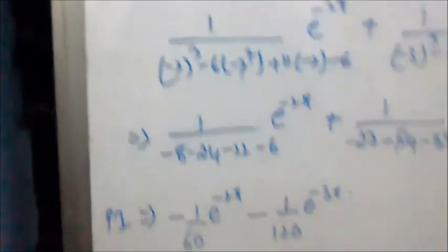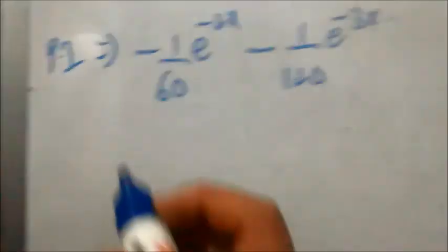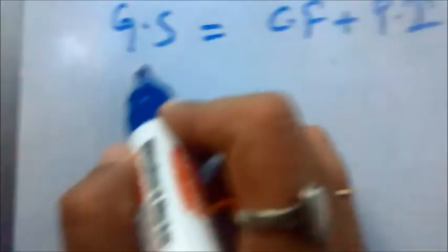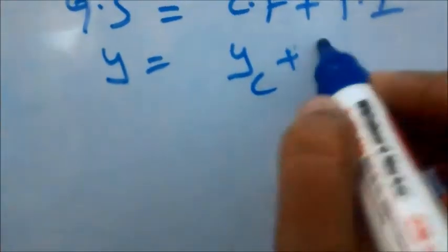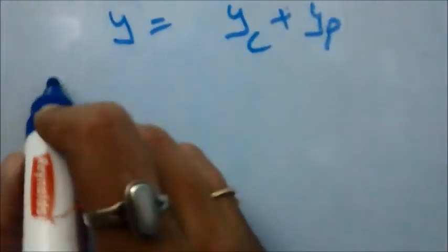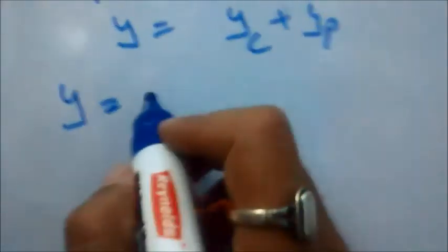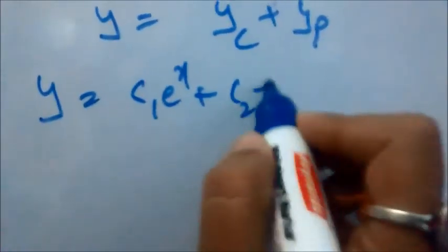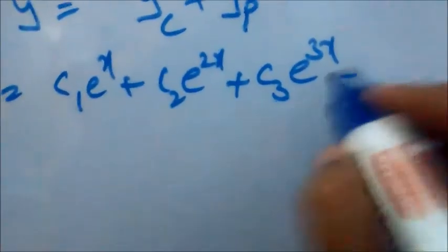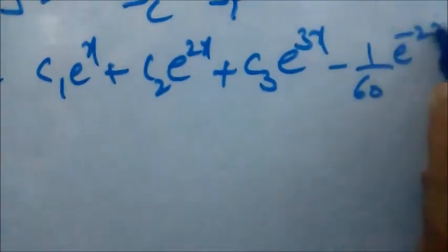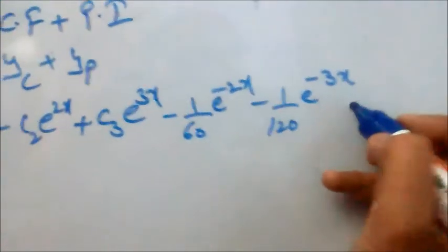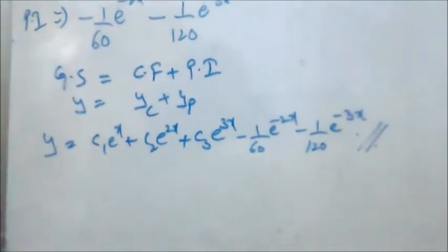This is our PI. After getting the PI, we write the general solution: y = y_c + y_p, where y_c is the complementary function and y_p is the particular integral. So y = C₁e^x + C₂e^(2x) + C₃e^(3x) - (1/60)e^(-2x) - (1/120)e^(-3x).